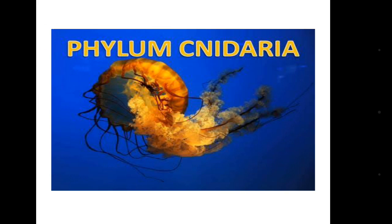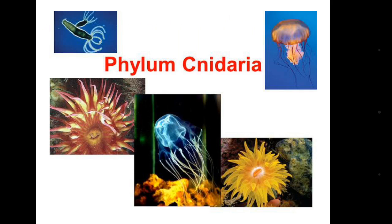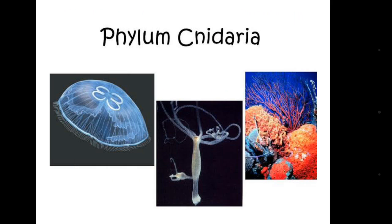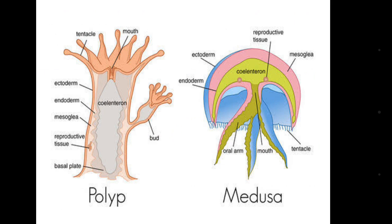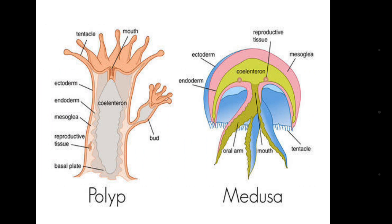The next phylum is Phylum Cnidaria. You can easily identify some tentacles in the bodies of cnidarians. All of them have tentacle-like structures in their body, and they also have a body cavity. Examples include hydra, which exists in polyp and medusa forms. They have a body cavity known as the coelenteron.